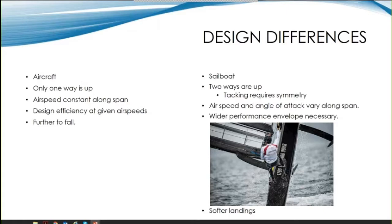The general difference between an aircraft wing and a sail is that on an aircraft there's only one way that is up. However, on a sailboat, two ways are up - port and starboard. Accounting for this requires symmetry in sail design. Also, airspeed is relatively constant along the span of an aircraft wing, compared to a sail where you have airspeed and angle of attack varying along the span. So the sailboat requires a broader performance envelope to be considered. But on the bright side, the sailboat does have softer landings.